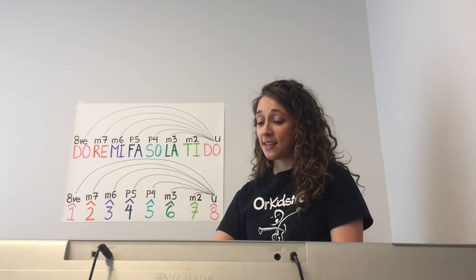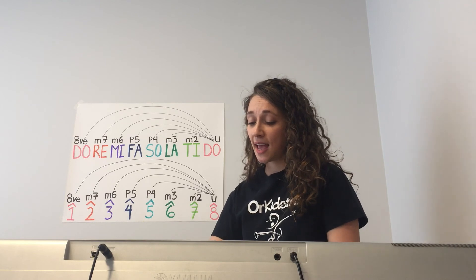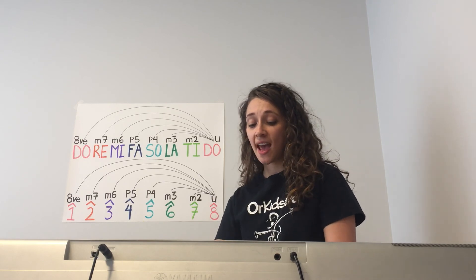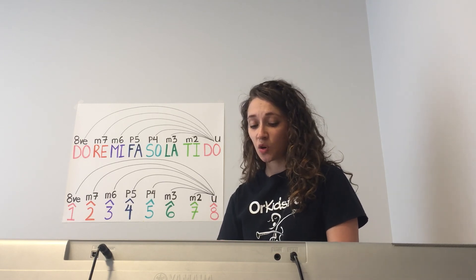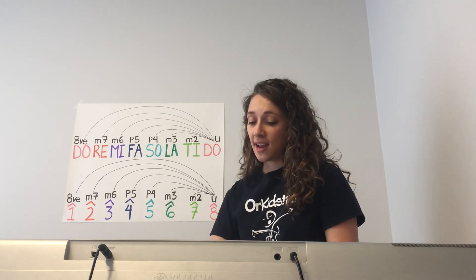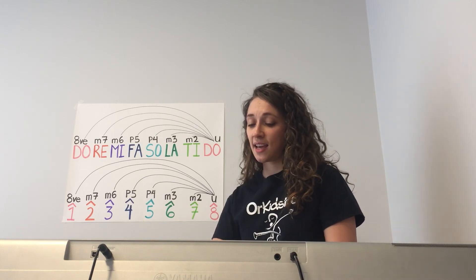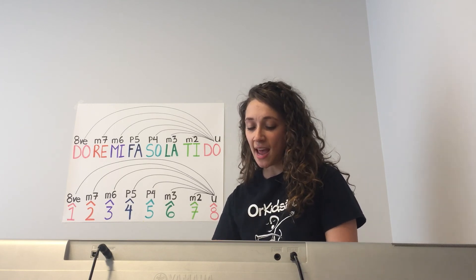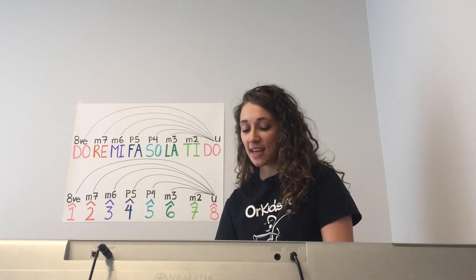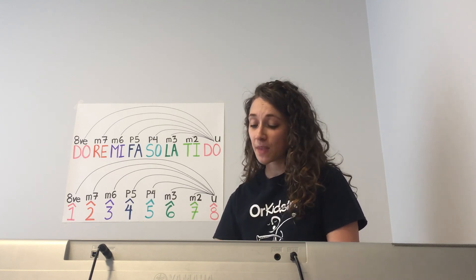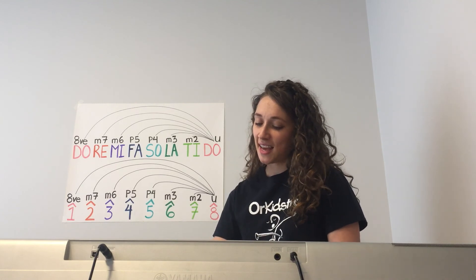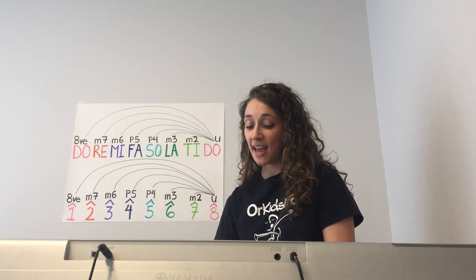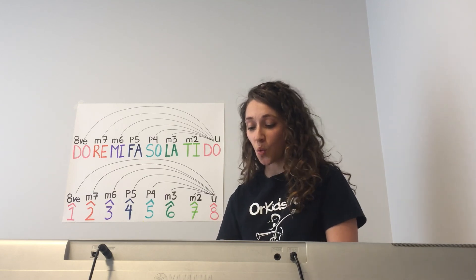Scale degree exercise, sung twice: Eight — eight, eight — set, eight — six, eight — five, eight — four, eight — three, eight — two, eight — one, eight. High do (8) is paired with each descending scale degree, using 'set' for seven, sung steadily through the full sequence.